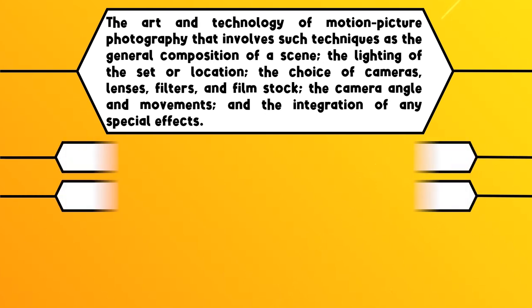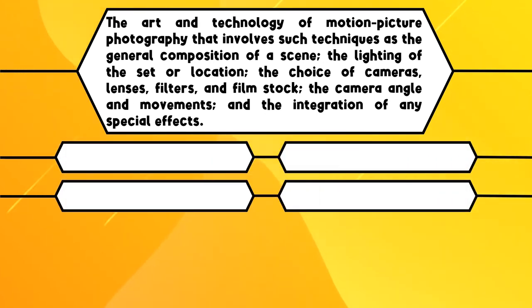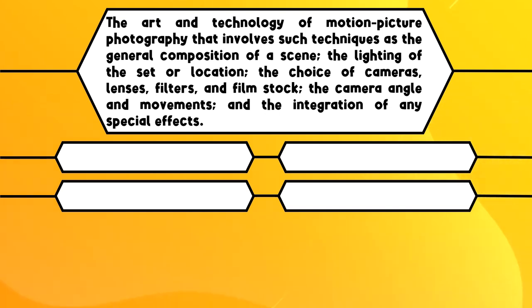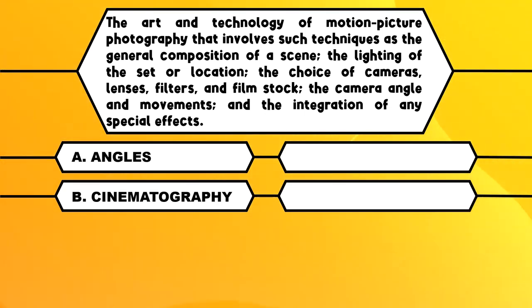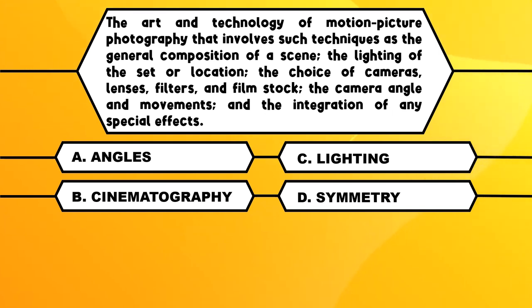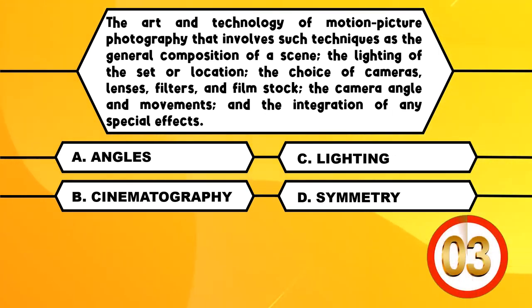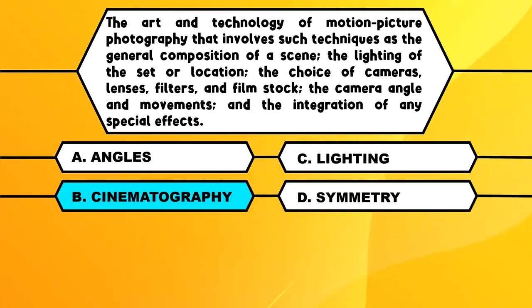Number 5. The art and technology of motion picture photography that involves such techniques as the general composition of a scene, the lighting of the set or location, the choice of cameras, lenses, filters, and film stock, the camera angles and movements, and the integration of any special effects. A. Angles. B. Cinematography. C. Lighting. D. Symmetry. The correct answer is B, Cinematography.